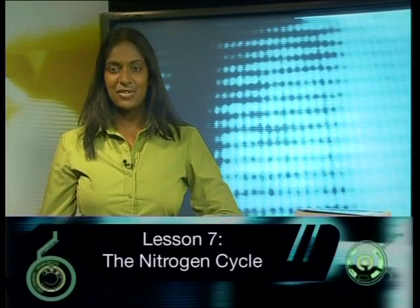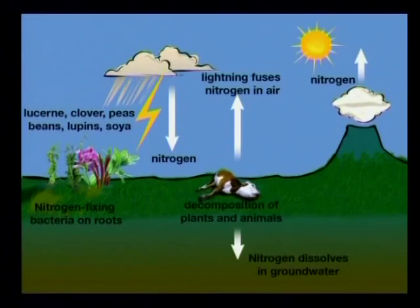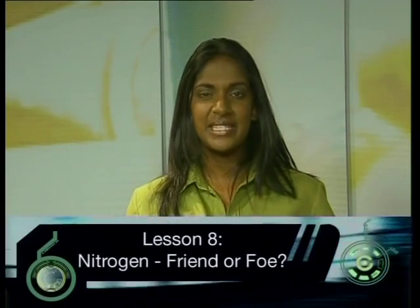Lesson seven focuses on the ways in which nitrogen is converted into other more useful compounds. These compounds can then be absorbed by plants and passed on to animals. Nitrogen is not only converted to compounds in nature, but in industry too. We examine the Haber process and show how ammonia can be used to make nitric acid and ammonium nitrate found in fertilizers.